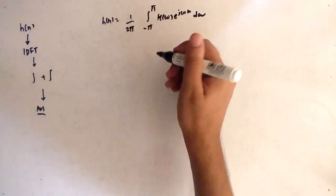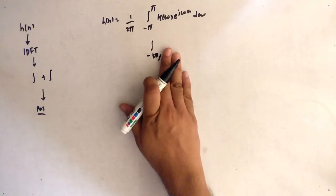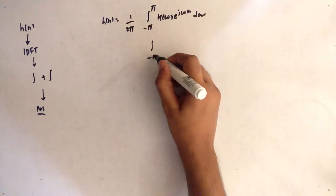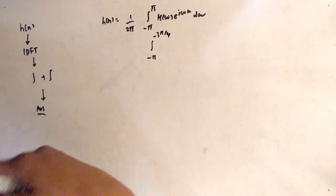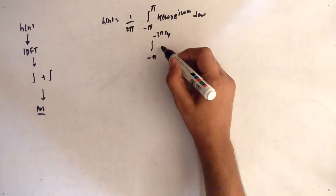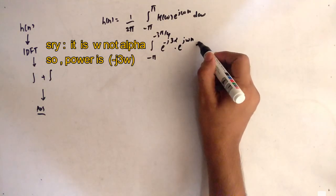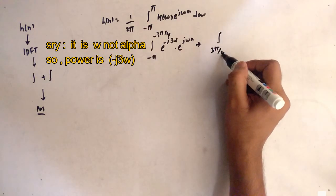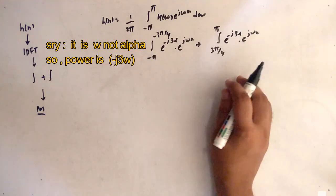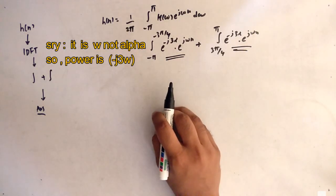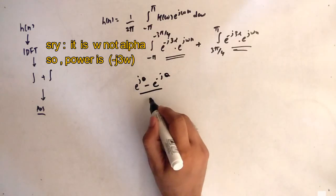We split the integral because H(ω) works over two ranges. The lower range is −π to −3π/4 and the upper range is 3π/4 to π — limits are critical here, any mismatch will give a wrong answer. Each integral includes e raised to −j·3α times e raised to j·ωn. We then club the exponentials and bring them into the form (e^jθ − e^{−jθ}) / (2j).